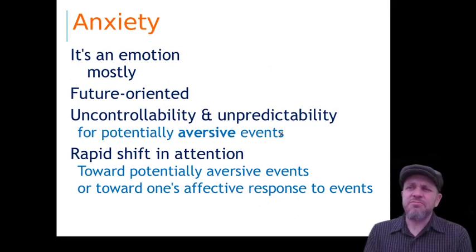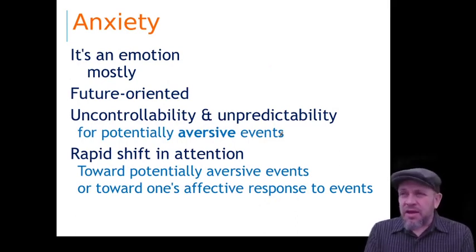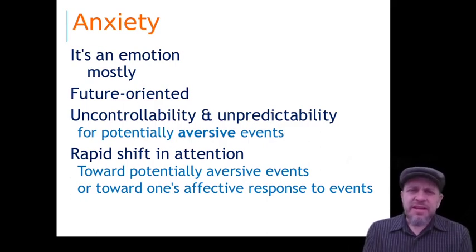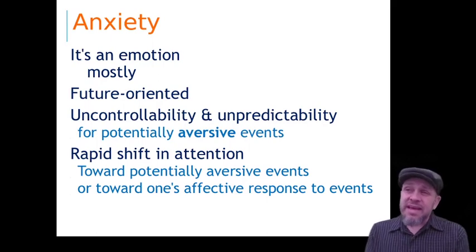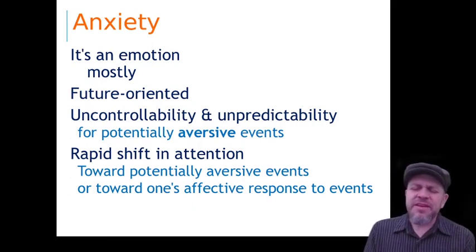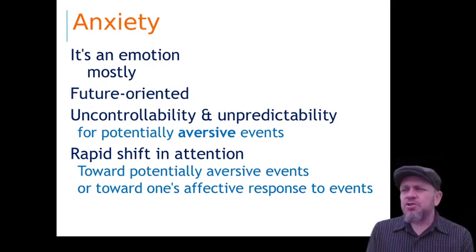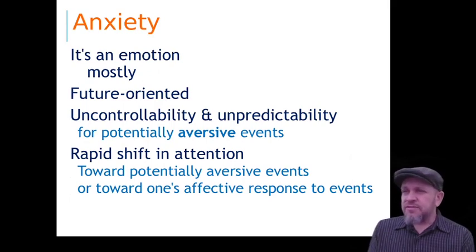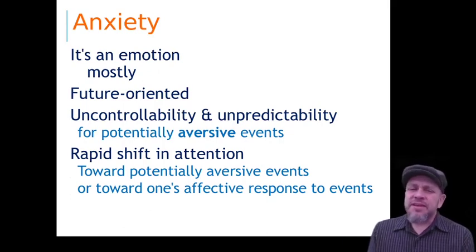Anxiety is usually thought of mostly as an emotion, but there's definitely thinking going on. Anxiety changes the way you think, and it's mediated by thoughts — you have to be thinking about something before you can have the anxiety. It's future-oriented: anxiety is about something that hasn't happened quite yet but will happen in some future time. Thoughts about things that might be uncontrollable and unpredictable make anxiety much worse. If there's something you can totally control or predict, anxiety tends to be fairly low.